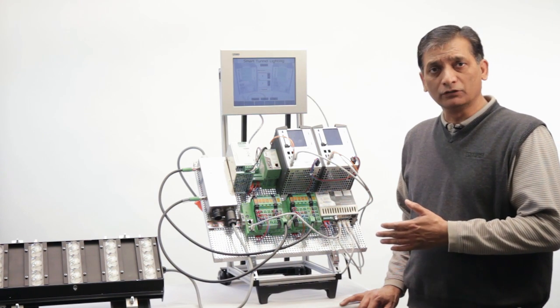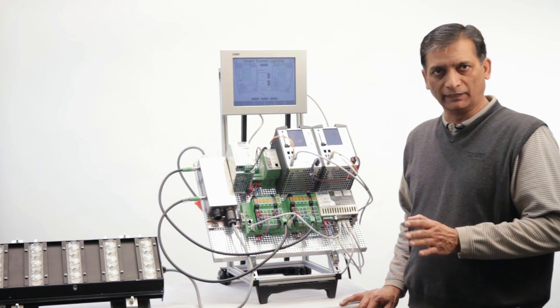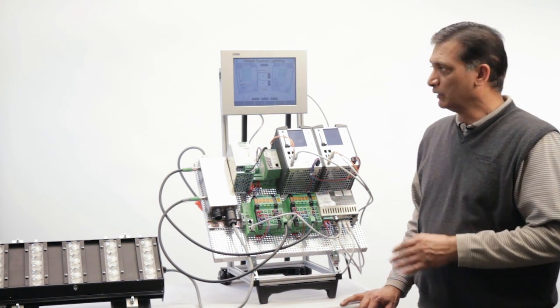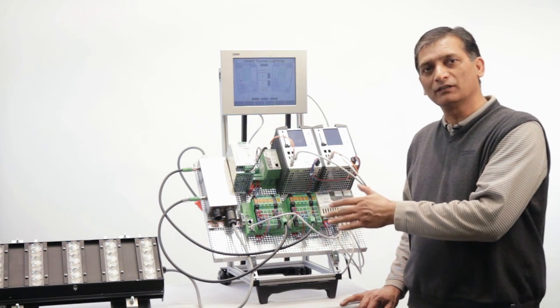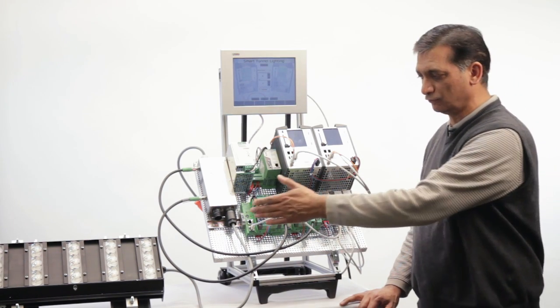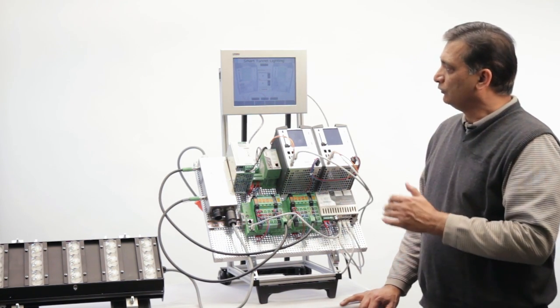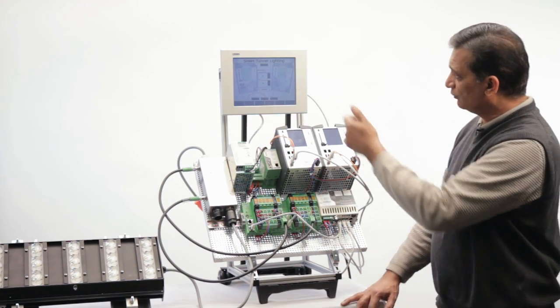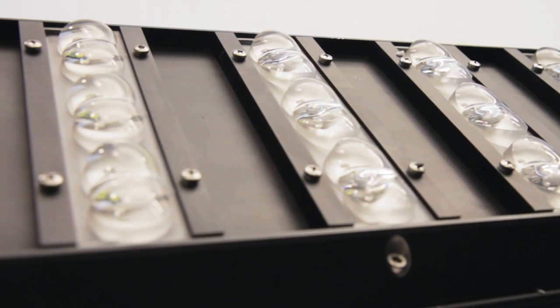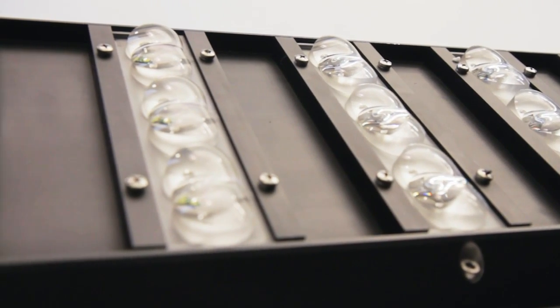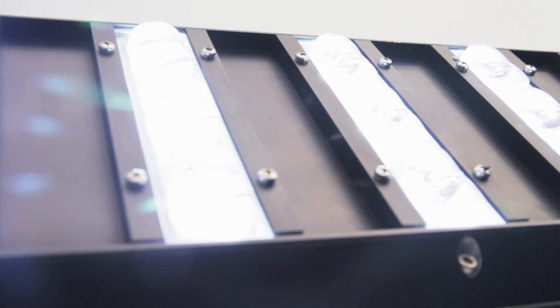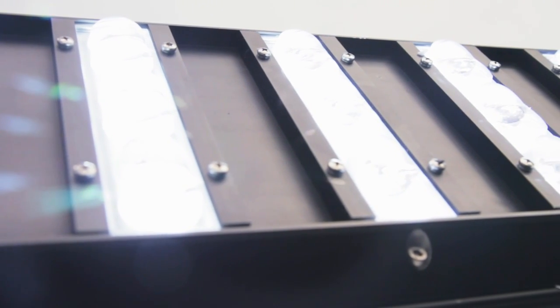This demo is configured for three levels of lighting or luminosity. Zero, 10% and 100% that this fixture offers here. Zero is of course off and it is at zero luminosity. We can take it to 10% and then we can take it to maximum luminosity, which is 100%.